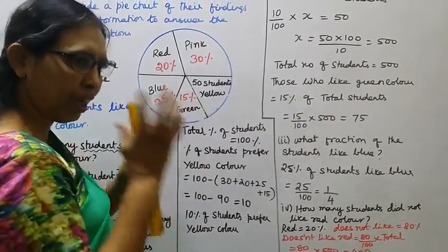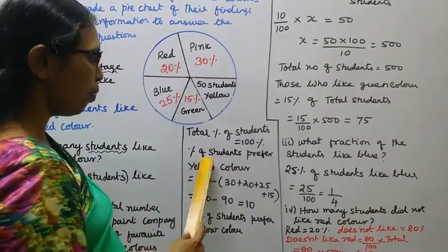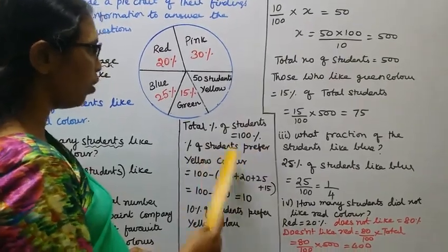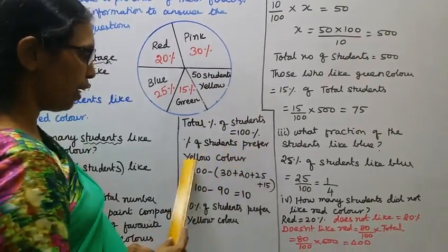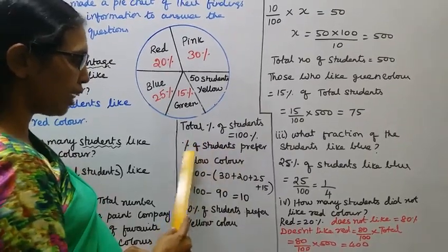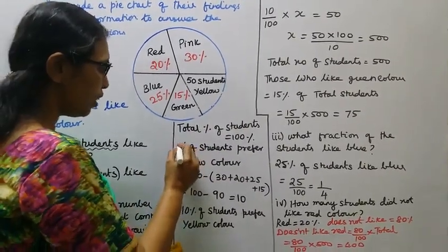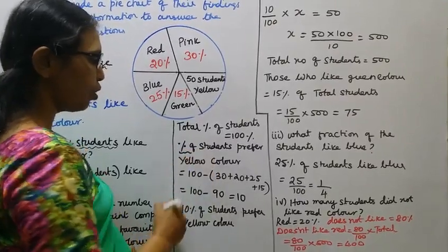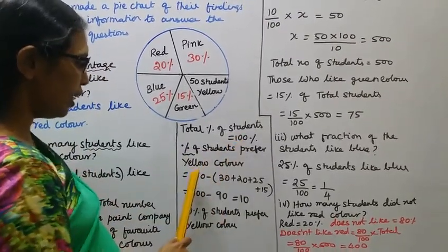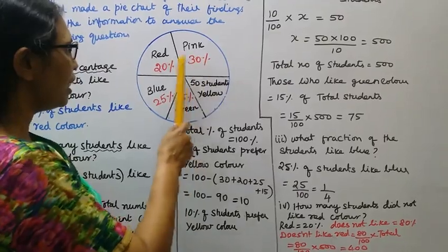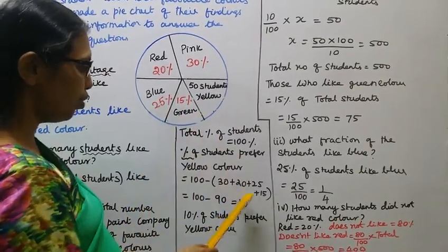Total percentage is 100%. Now, the percentage of students who prefer yellow color. We calculate: 100 minus (30 plus 20 plus 25 plus 15).